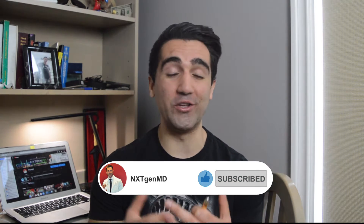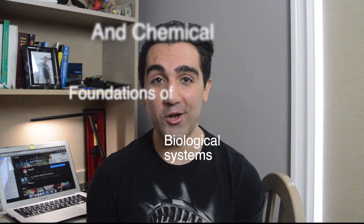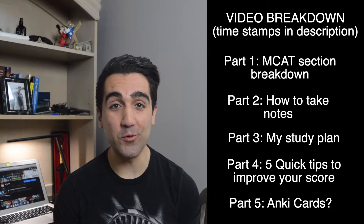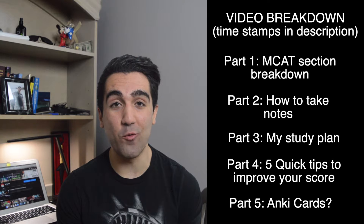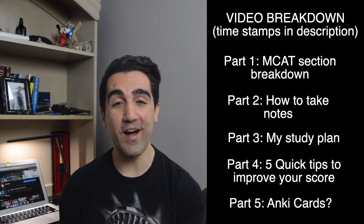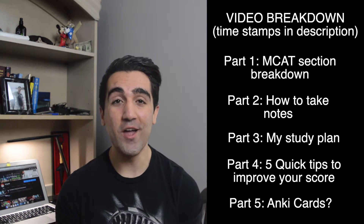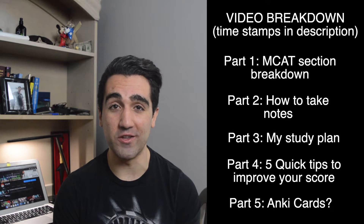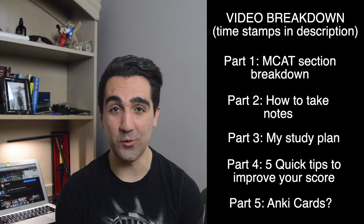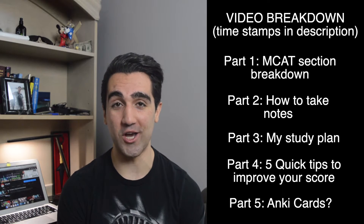In the past I've made videos talking about the CARS section and also a video talking about my study schedule and how I believe everyone should study if they want a great score on the MCAT. Today I'm going to make a direct continuation of that video, talking about the physical and chemical foundations of biological systems — basically exactly how I studied for the chemistry and physics section. I want this video to be a guide, and I'll also throw in five quick tips at the very end for easy ways to bring up your score right away. I'm also going to link some free practice resources in the description below.